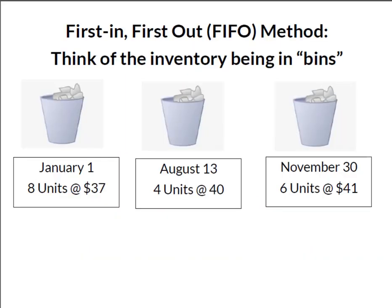Under a first-in first-out method we're going to sell the oldest units first. I think of inventory as being in bins. At the beginning of the year we had those eight units in bin number one. Then in August we purchased more — that was bin number two — and in November we bought six more and those are in bin number three.